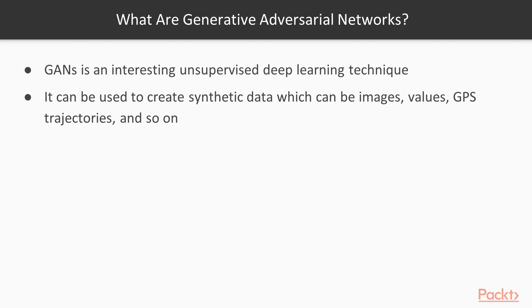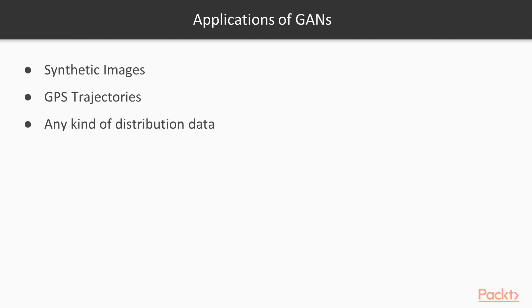GANs are the most beautiful unsupervised deep learning technique — they can be used for creating synthetic datasets. Yann LeCun stated that GANs have been the most interesting thing that has happened to the field of machine learning in the past 10 years, which means GANs are really important. Applications of GANs are many: they can be used for creating synthetic images — you have one image and generate 100 similar images — you can create synthetic GPS trajectories, and any kind of distribution data can be generated.